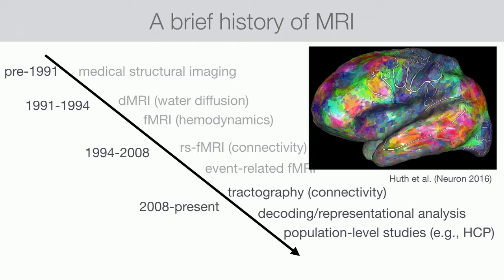We've seen refinement of tractography methods to map white matter pathways, the rise of machine learning for decoding analysis — so we can actually decode what people are thinking, whether nouns and verbs or animate or inanimate objects. What you're seeing here is a map of semantic relations in the brain as somebody listens to a podcast. We've also seen a rise in very big population-level research studies like the Human Connectome Project, collecting data from hundreds or thousands of subjects at a time. So that gets us to the modern day.